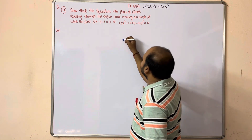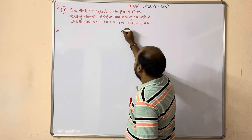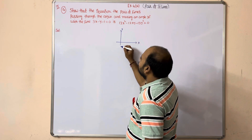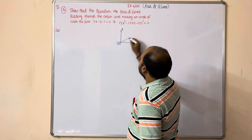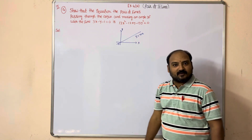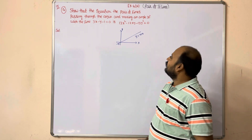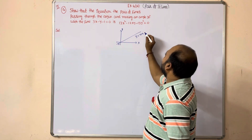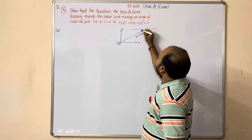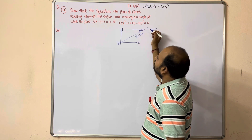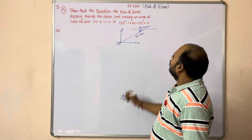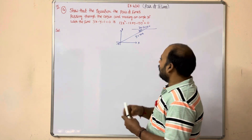The figure will come like this, dear students. These are the coordinate axes and this is the origin. We are assuming that y equal to mx is a line passing through the origin and making an angle 30 degrees with the given line. This given line is 3x minus y minus 1 equal to 0, making an angle of 30 degrees.